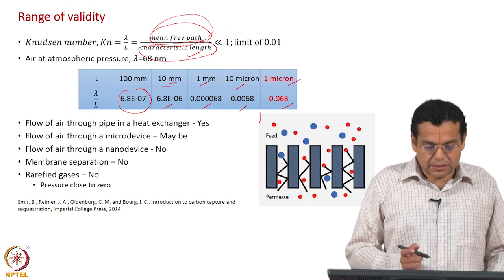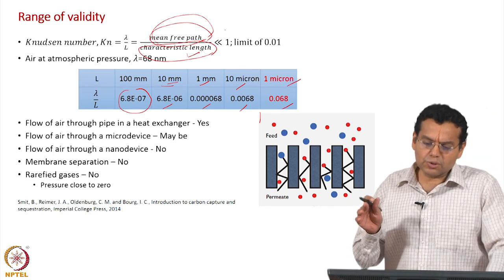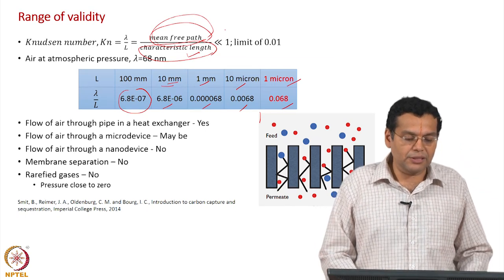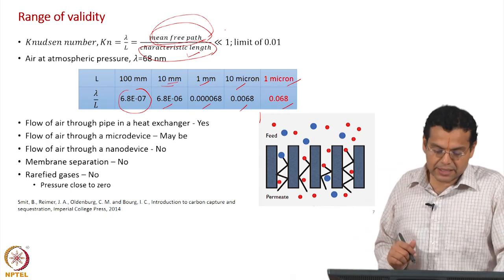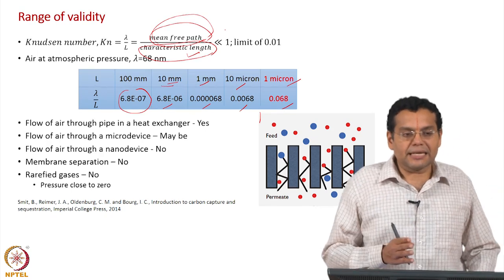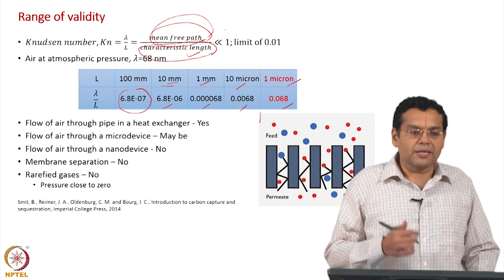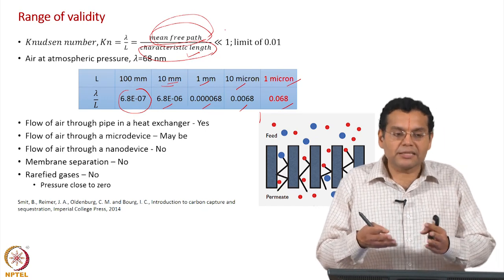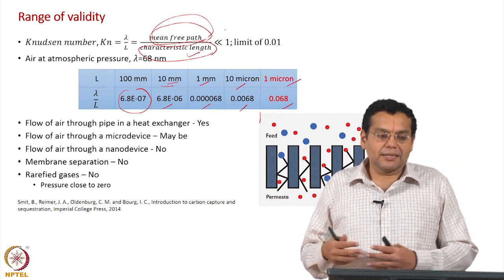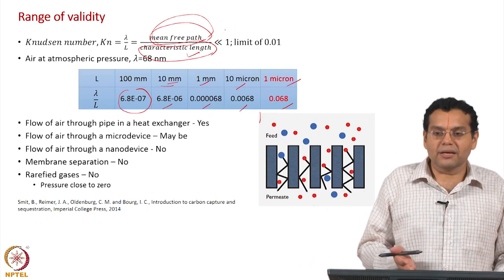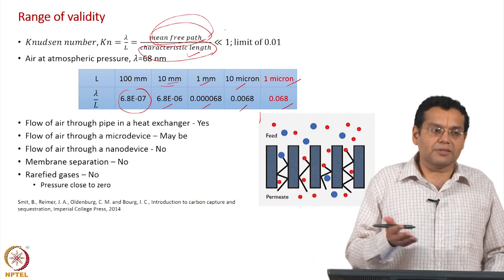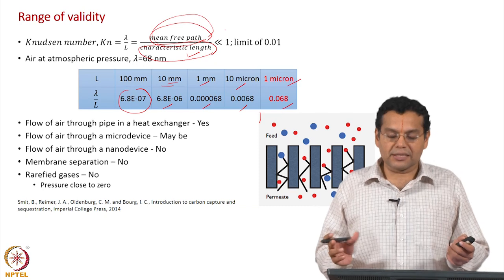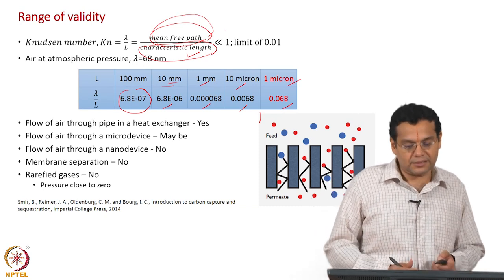This tells us the scope of the equations discussed in this course — the whole transfer phenomena course. In the introduction we said three length scales are involved: macroscopic (equipment size), microscopic (inside the equipment), and molecular. All the cases where the continuum hypothesis breaks down revolve around the molecular length scale, which is not within the scope of this course. We have quantified the continuum hypothesis in terms of the Knudsen number.